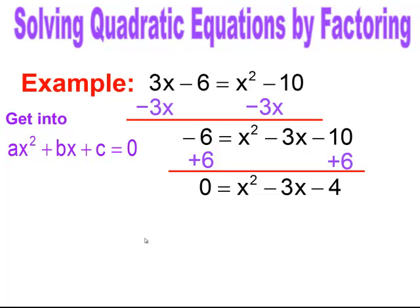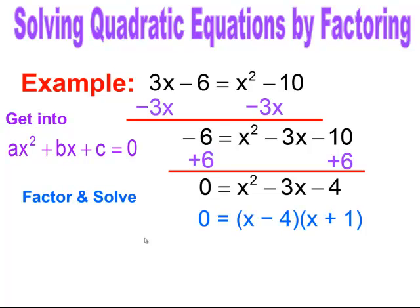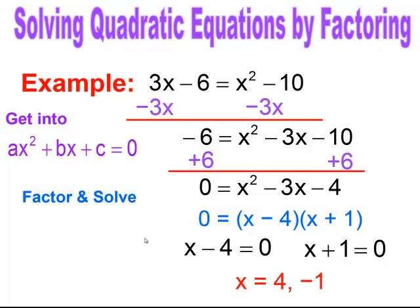Now that it's in standard form, I can factor. I factor and get x minus 4 times x plus 1. I take each factor and set it equal to zero and solve. I get x equals 4 and x equals negative 1.